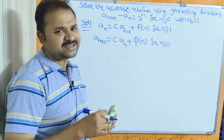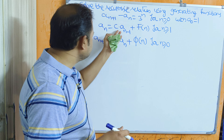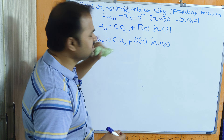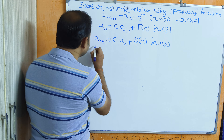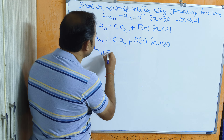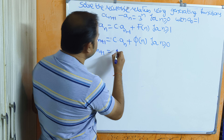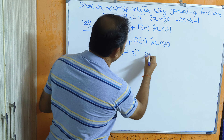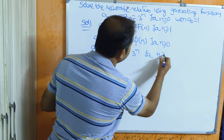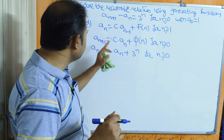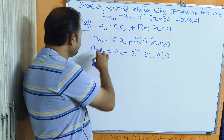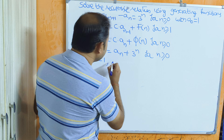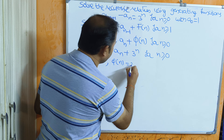We can get the recurrence relation in either form. If we observe this problem, we can rewrite the recurrence relation as a(n+1) equal to a(n) plus 3^n for n greater than or equal to 0. Comparing with the standard form, the constant c value is 1, and f(n) equal to 3^n.